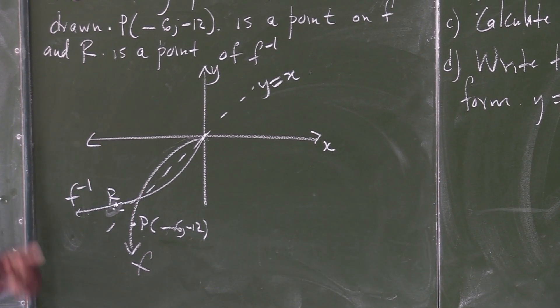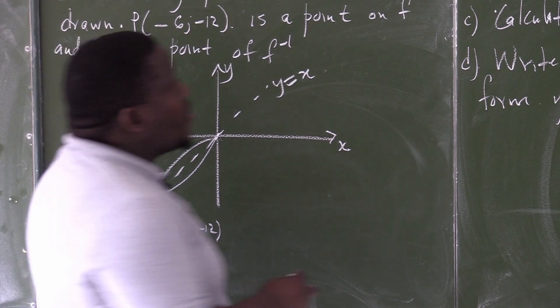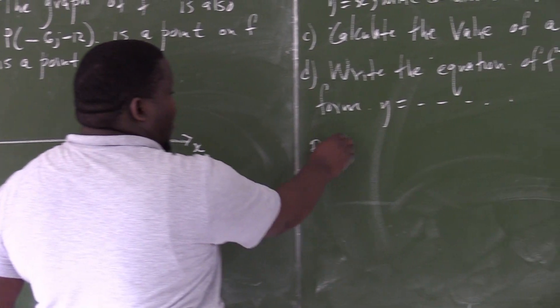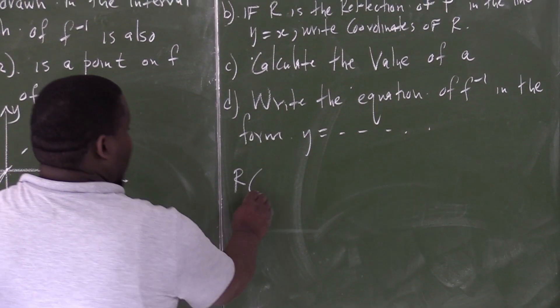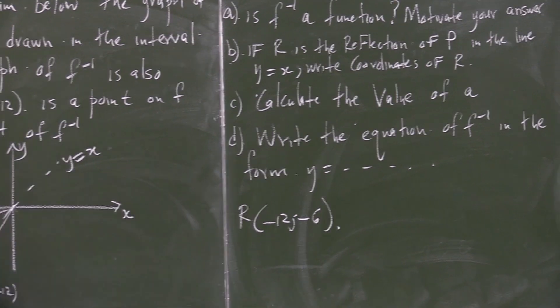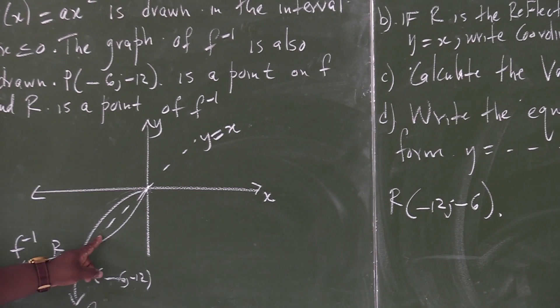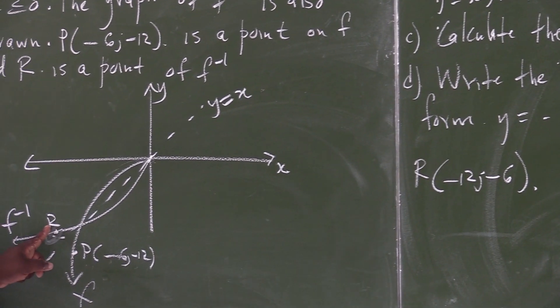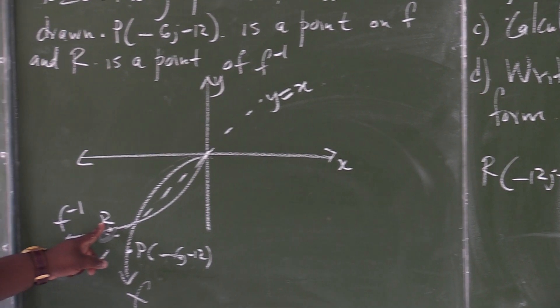In terms of interchanging x and y, therefore, the coordinates for R must read as a negative 12 and a negative 6 because it reflects P along this line. Then you have R which can say negative 12 and negative 6.